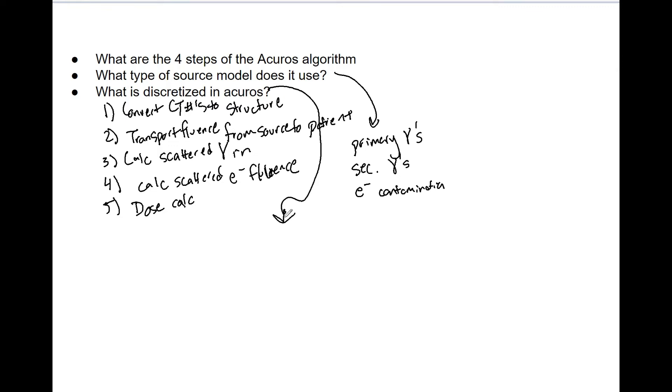To discretize, it discretizes one space, and it also discretizes energy. So what we're talking about is essentially you're discretizing, or another word is you're grouping things together. That's what we mean when we say discretized.